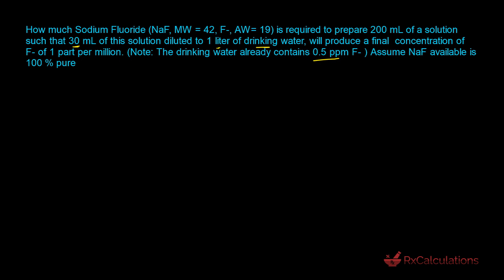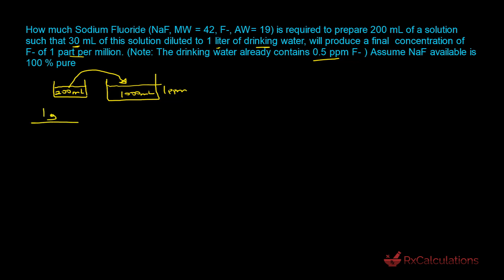Let's draw a schematic: we make a 200 mL concentrated solution, take out 30 mL, and prepare a 1000 mL solution with a final concentration of 1 part per million. First, we determine the amount of fluoride ion in the 1000 mL preparation. One ppm means 1 gram of fluoride ion per million milliliters.